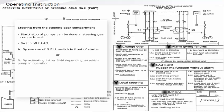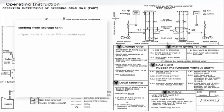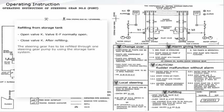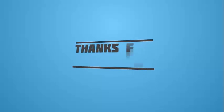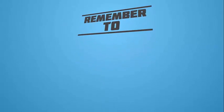Open valve K. Valve E and F are normally open. Close valve K after refilling. The steering gear has to be refilled through one steering gear pump by using the storage tank system. Close valves A and B or C and D.